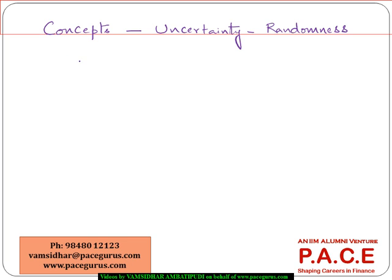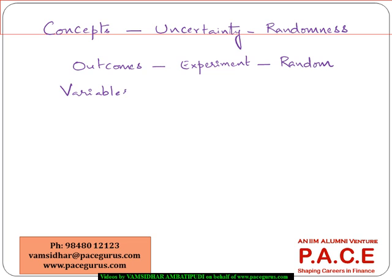Wherever we see that possible outcomes from an experiment are going to be random in nature — where we are not sure what the outcome is going to be — all those kinds of scenarios come under the scope of probability. Any variable which takes random outcomes is called a random variable. In the investment world, the daily return on a stock can be treated as a random variable because tomorrow's return is uncertain.